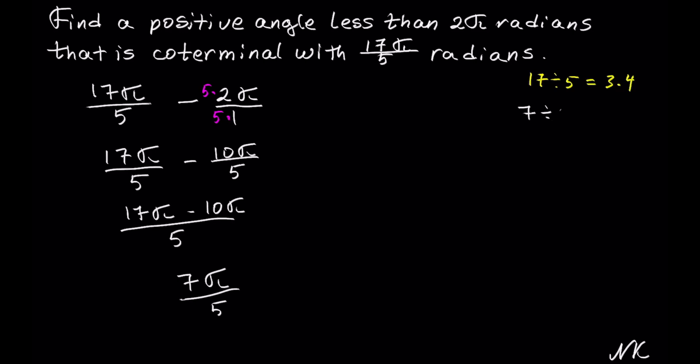7 divided by 5 gives us 1.4. 1.4 is less than 2, so our radian angle is less than 2π. This means that 7π/5 radians is our solution. That's all.